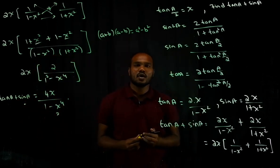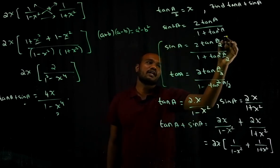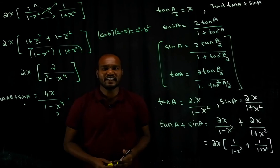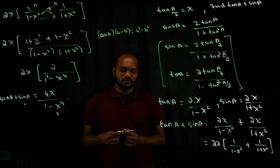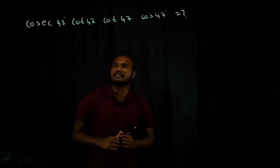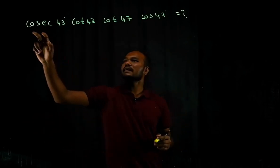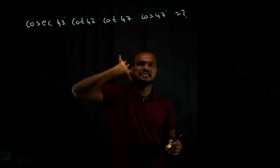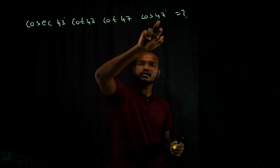These two half-angle formulas are essential — without them the question is very difficult to solve. Now, for a similar type of question: cosec 43°, cot 43°, cot 47°, cot 47°, and cos — notice the pattern of cosecant, cot, cot, and cos.